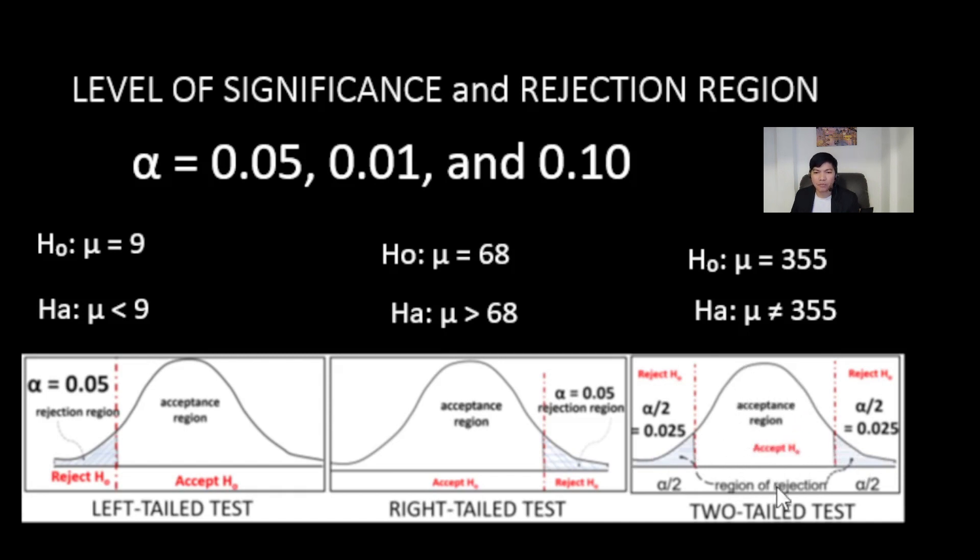If the computed z value falls in the shaded region, which can be on the left or on the right of the normal curve, then we have to reject the null hypothesis.